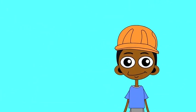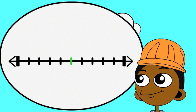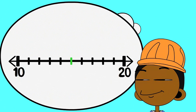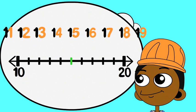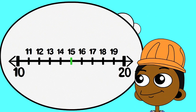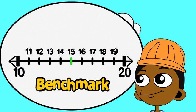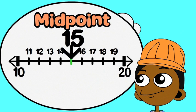Here are some useful things to know. You can show any number on a number line. Numbers to the right have a greater value than numbers to the left. Every number that ends in the digits 1 through 9 sits between two tens — the nearest ten on either side of your number is a useful benchmark. And the midpoint is the number that is halfway between the two benchmarks.